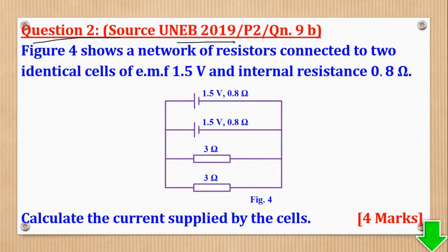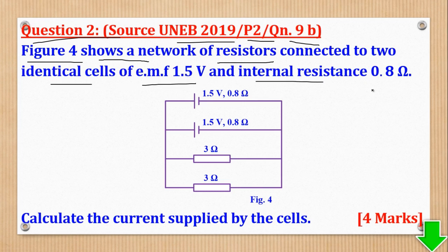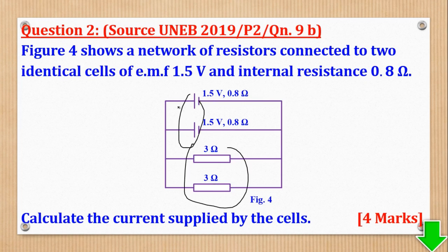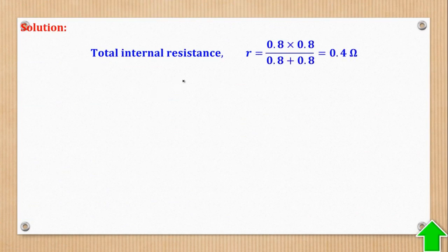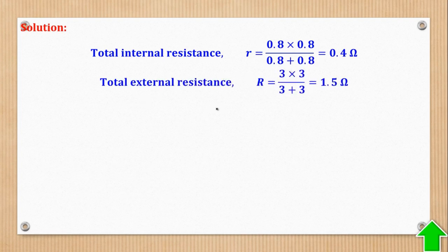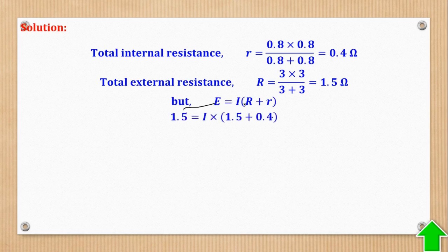Question 2 came from UNEB 2019 paper 2, question 9b. A network of resistors is connected to two identical EMFs of 1.5 volt and internal resistance 0.8 ohm. Calculate the current supplied by the cells. Total internal resistance (parallel): product over sum = 0.4 ohm. Total external resistance (parallel): product over sum = 1.5 ohm. Using E = I(R + r): 1.5 = I(1.5 + 0.4), and solving gives the current.